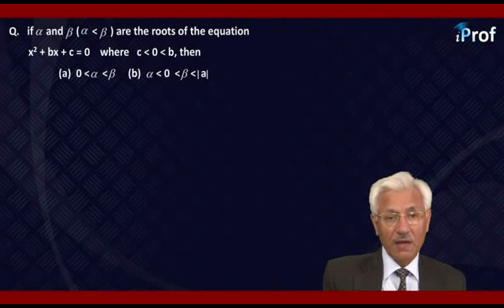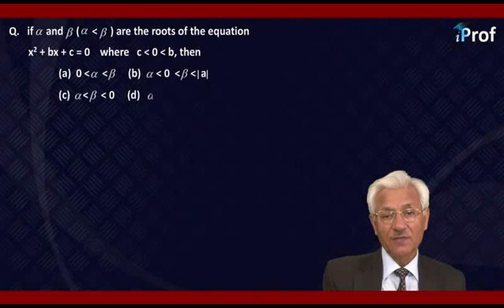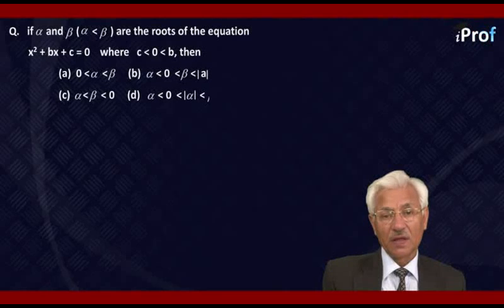The remaining options are: (c) α < β < 0; or (d) α < 0 < |α| < β.